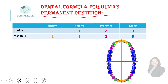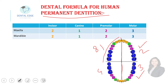Let's first see the dental formula for the permanent dentition. You should know how many permanent teeth are present in adults and what their names are. This is the maxillary arch — the upper arch — and this is the mandibular arch. We divide this into four quadrants. In each quadrant there are eight permanent teeth: two incisors, one canine, two premolars, and three molars.